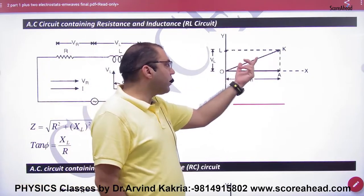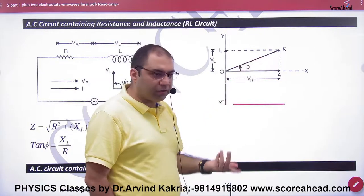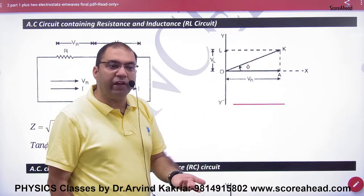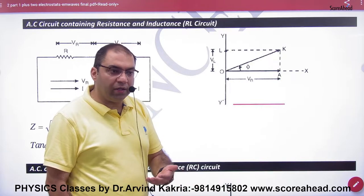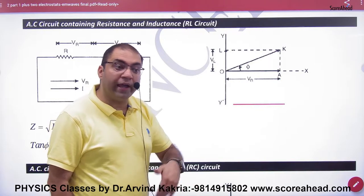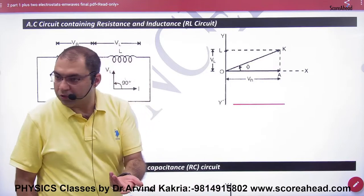What will happen to Vr? What will happen to the net voltage, under root of Vl square plus Vr square? Just Vc will change. What will happen to the net Z value? Under root of R square plus XL square. So what have you done until now?